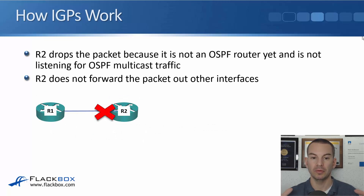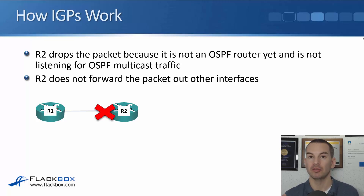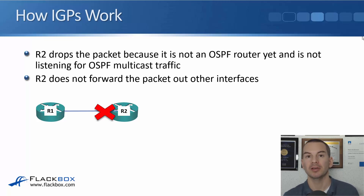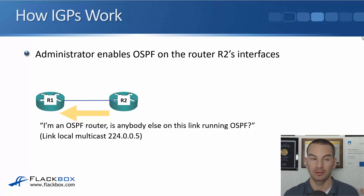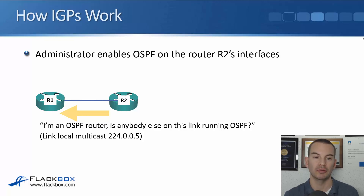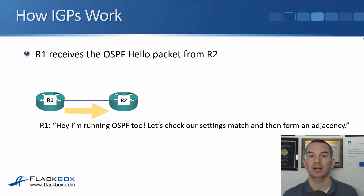In this instance, R2 does not have OSPF enabled yet, so it is going to drop that traffic because it's not listening for OSPF multicast traffic, and it's a link-local multicast meaning R2 is not going to forward it out another interface. Then the administrator enables OSPF on router R2's interfaces, and R2 will start sending out multicast OSPF hellos as well, saying 'I'm an OSPF router, is there anybody else on this link running OSPF?' — again on multicast 224.0.0.5 — and that will hit R1.